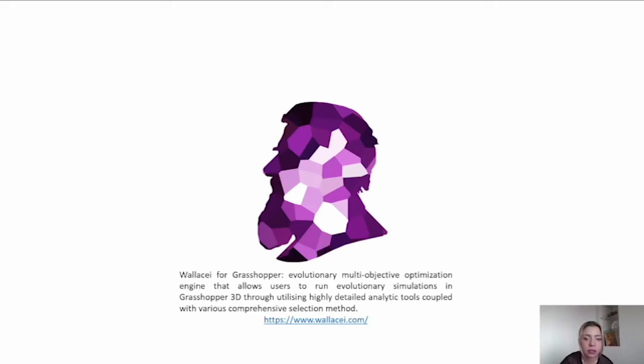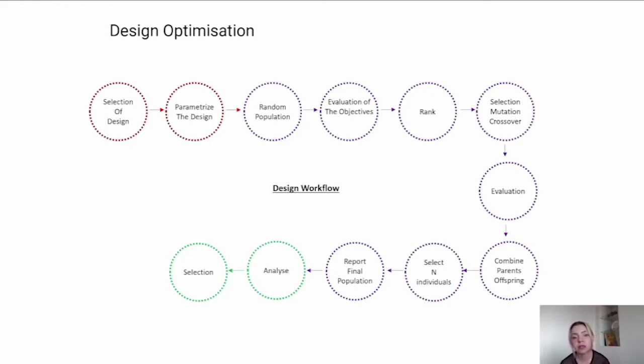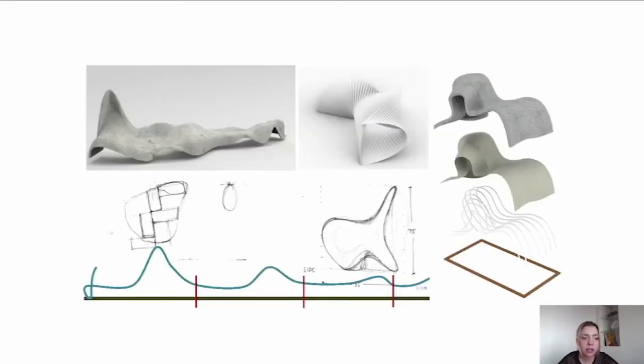So I will describe this computational workflow. This process starts with the selection of a design idea and the parameterization of the design, then a random population of design candidates are generated. These start to be optimized in generations according to the fitness objectives that the user provides. Generations of design candidates are produced and evaluated iteratively. After the analysis of the candidates, the selection is made and finally fabricated. So this was a design idea that we wanted to generate in this phase of research, a seating area or urban furniture.